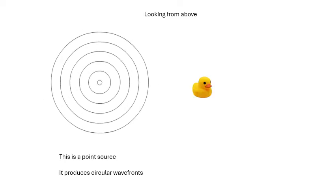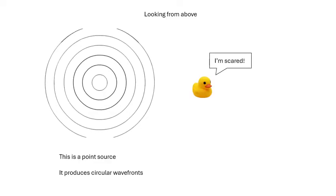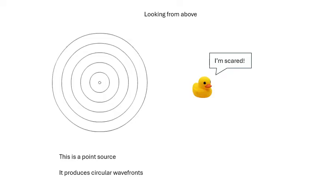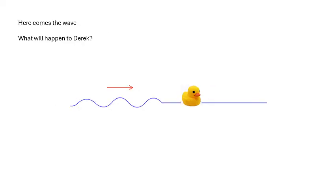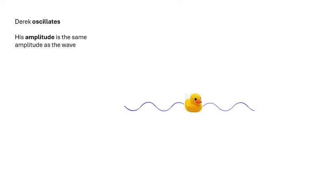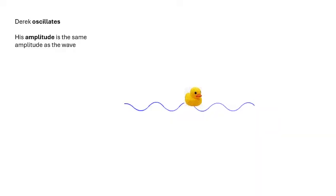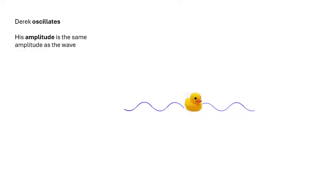The waves are heading towards Derek. He's scared — he doesn't know what's going to happen. Here comes the wave. What's going to happen to Derek? Well, Derek will oscillate up and down, and his amplitude will be the same as the amplitude of the wave. If you've been watching my videos in the right order, you'll know what amplitude means.